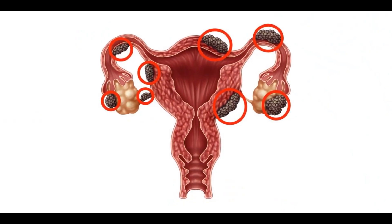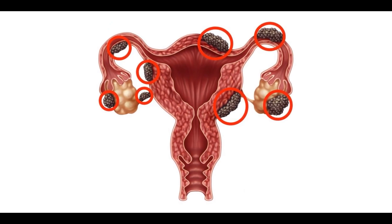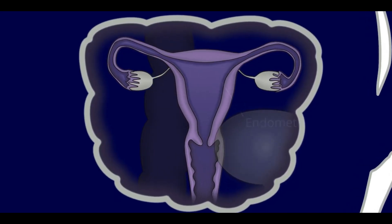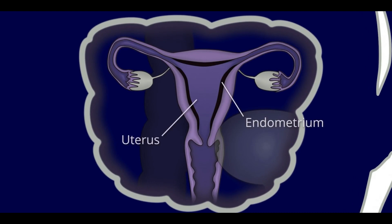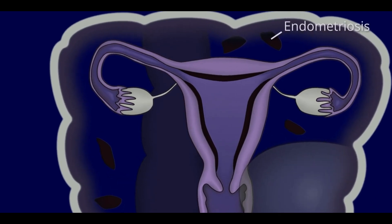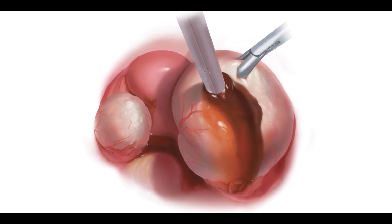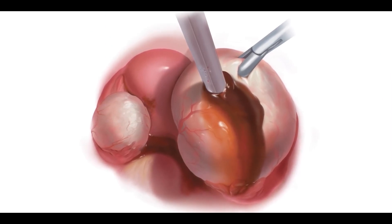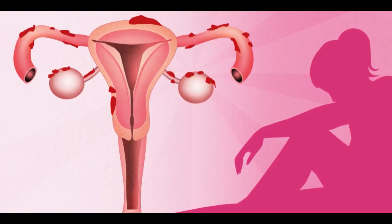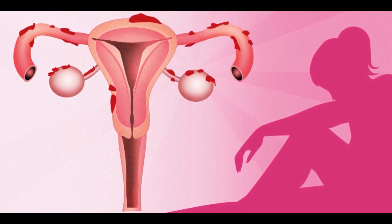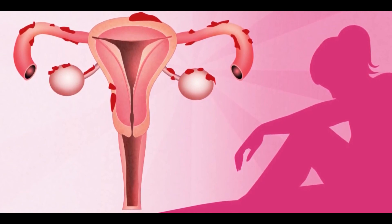Endometriomas are cysts that are made up of endometrial tissues. The function of endometrial tissues is to make the internal lining of the uterus. However, sometimes these tissues start growing on the ovaries, thus resulting in many complications. Endometriomas are filled with blood and can cause severe pain and bleeding if ruptured. Besides, endometriomas can also affect female ovaries, thereby reducing fertility.